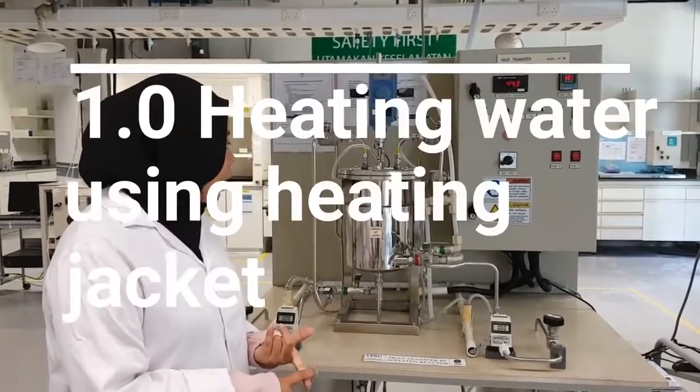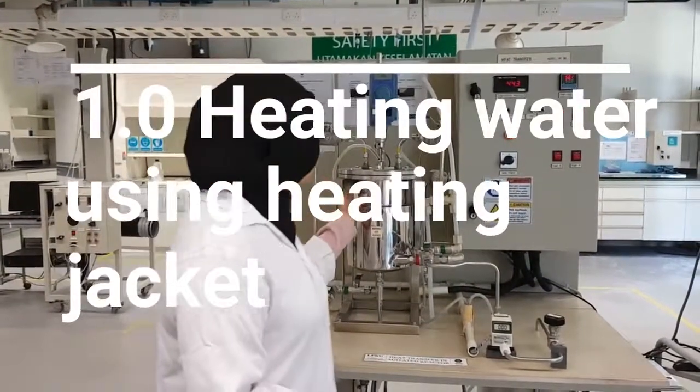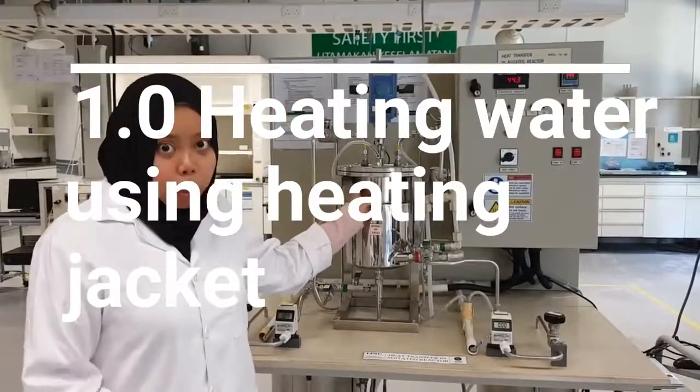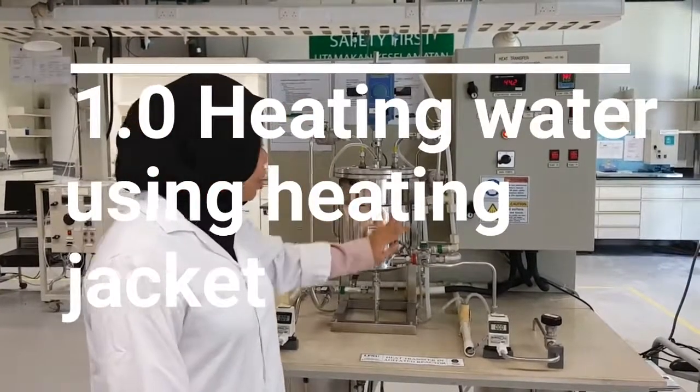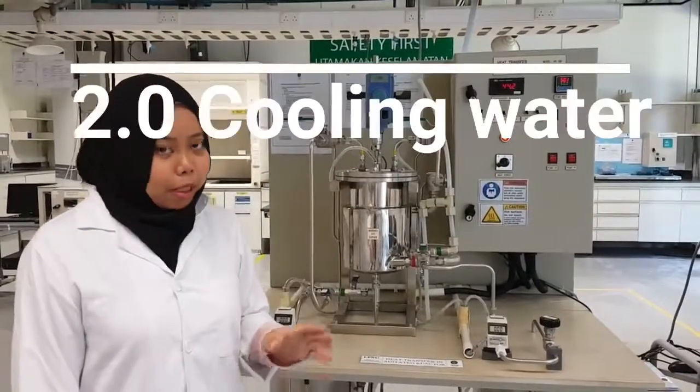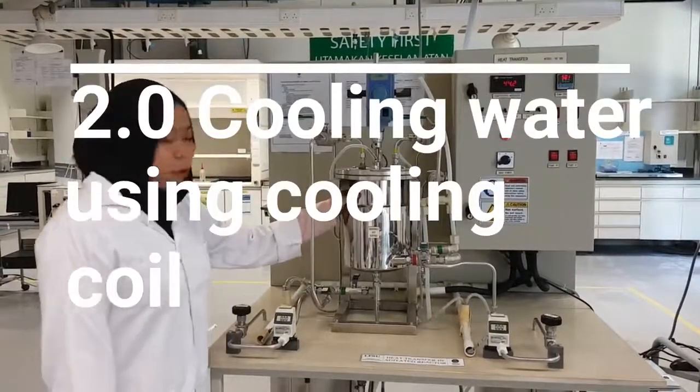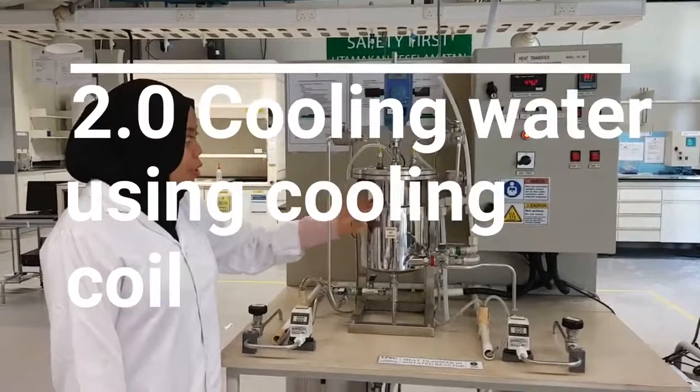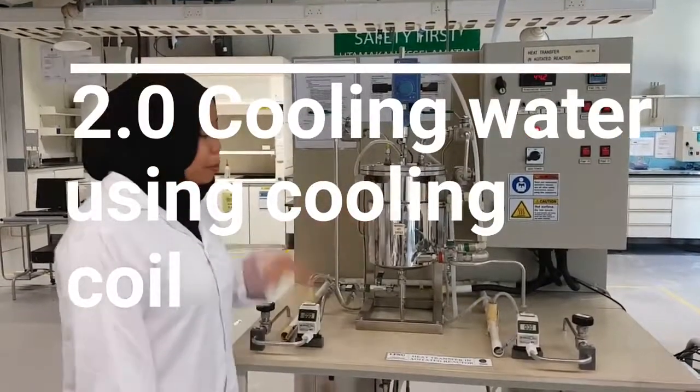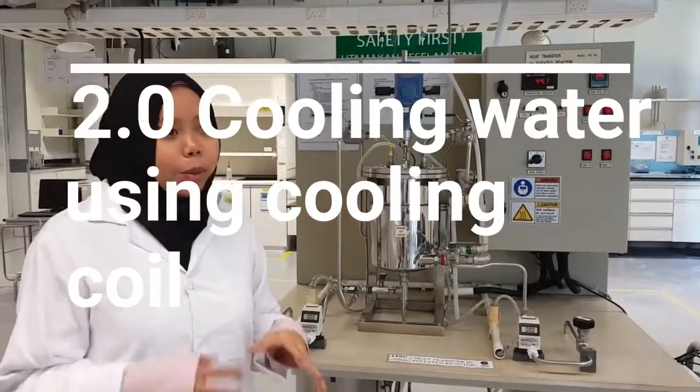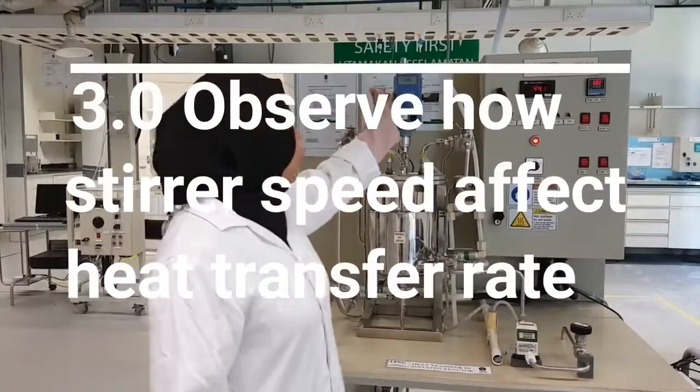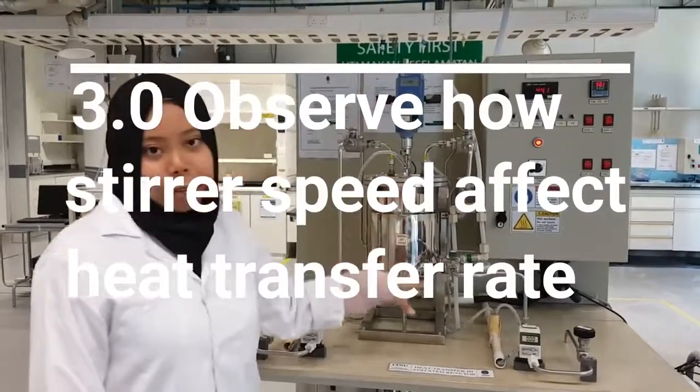The first part is heating cold water inside the reactor using heating jacket. The second part of the experiment is cooling down the hot water inside the vessel using cooling coil. And the third part of the experiment is we see how different speed of the rotation affect the heating time.